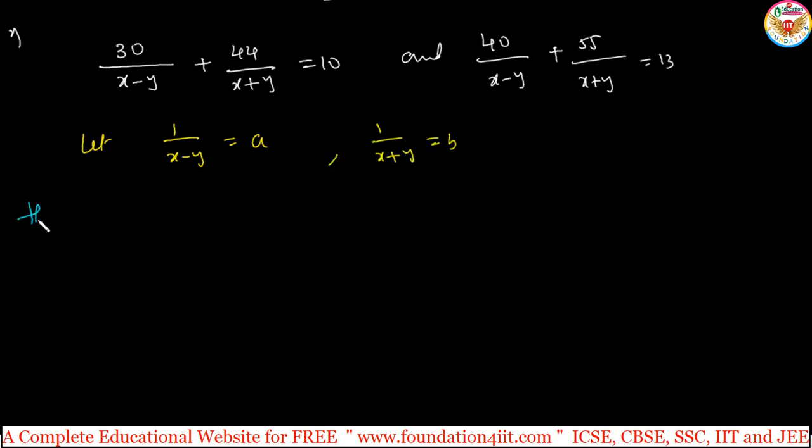Then directly you can take the question like this: 30 by x minus y that means 30 into 1 by x minus y, so 30a by simplification plus 44b equals 10. Let me equation 1. Again 40a plus 55b equals 13, equation 2.